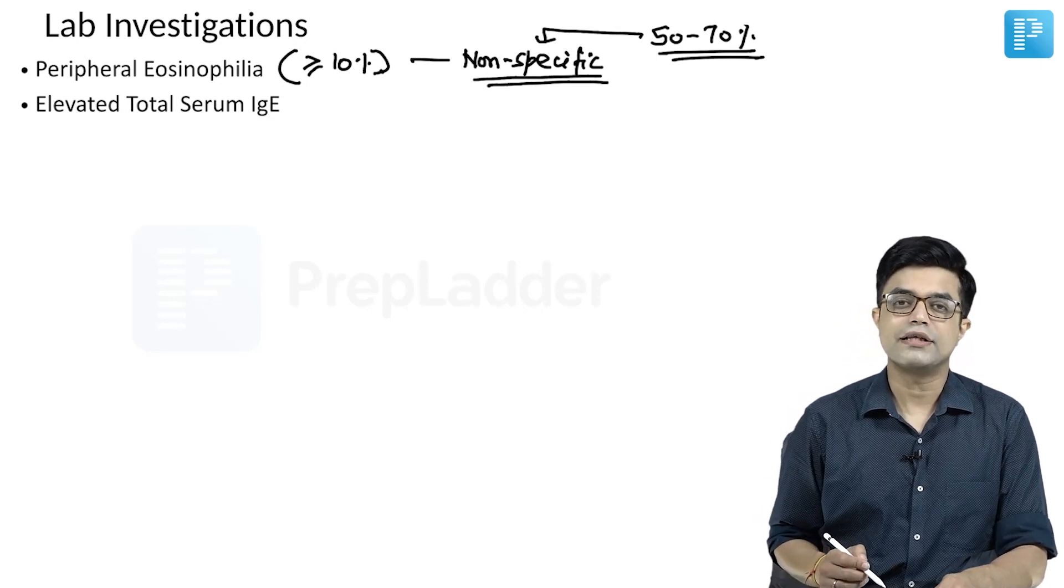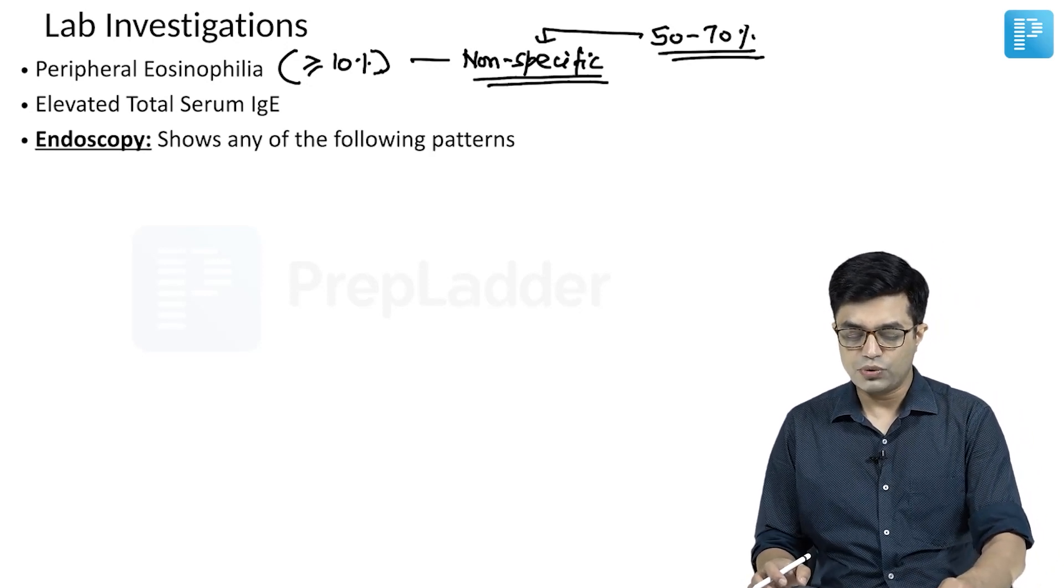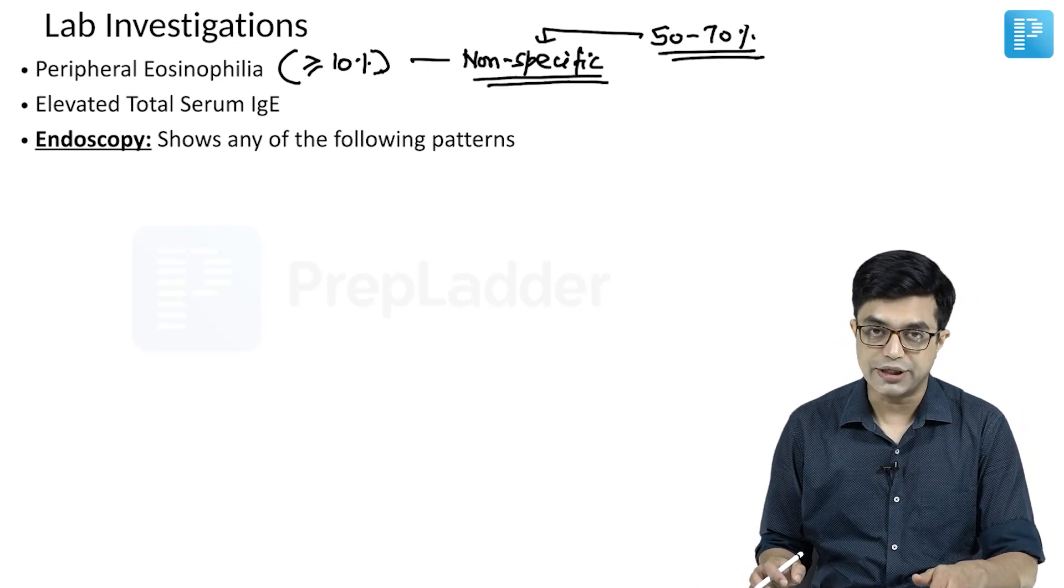Elevated total serum IgE may be present in some individuals. Both are non-specific findings. The investigation of choice is endoscopy of the upper GIT.